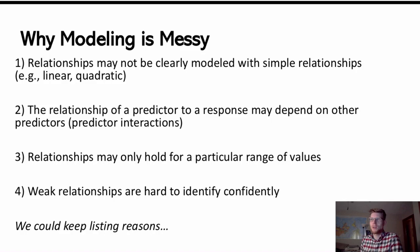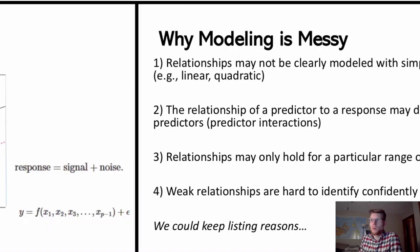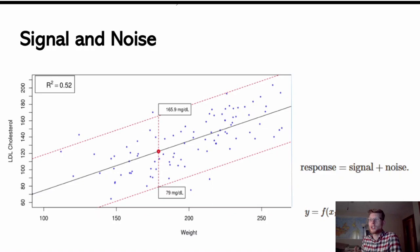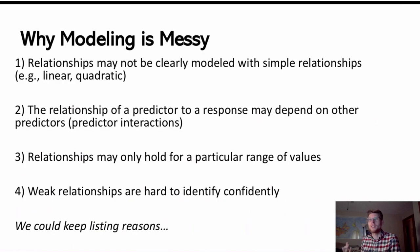Relationships may only hold for a particular range of values. It's not that these relationships that we model are eternally what they are for as long as the range of this variable exists. They may only really be true for a very particular range. So that can make models a little bit hard when we recognize that the relationship is just going to change in some way once we move past a certain point of values. And then just weak relationships are hard to identify confidently. When we have some signal but that signal is rather weak and small and overshadowed by the noise, it's going to be difficult sometimes to find that signal without having a whole lot of data. For all these reasons, and honestly more that we could list, modeling can be quite messy.